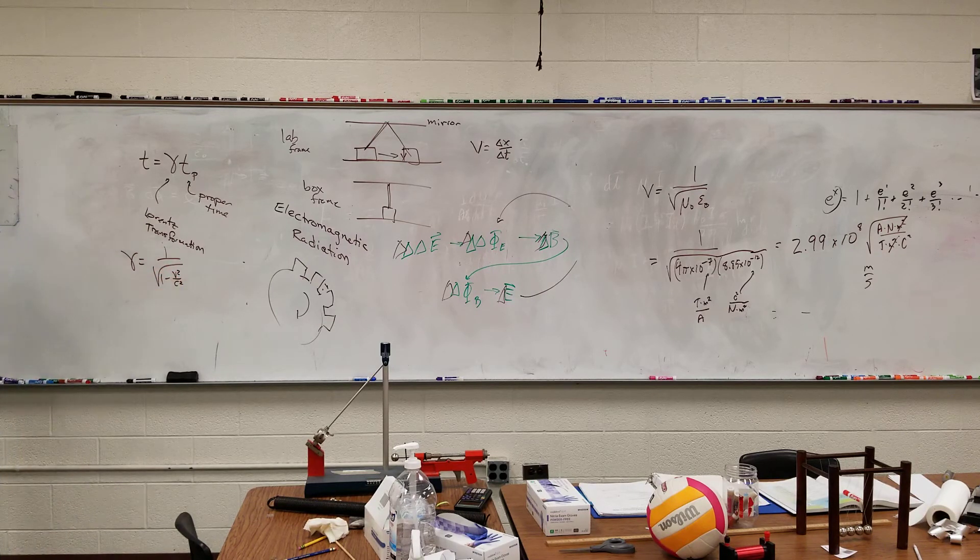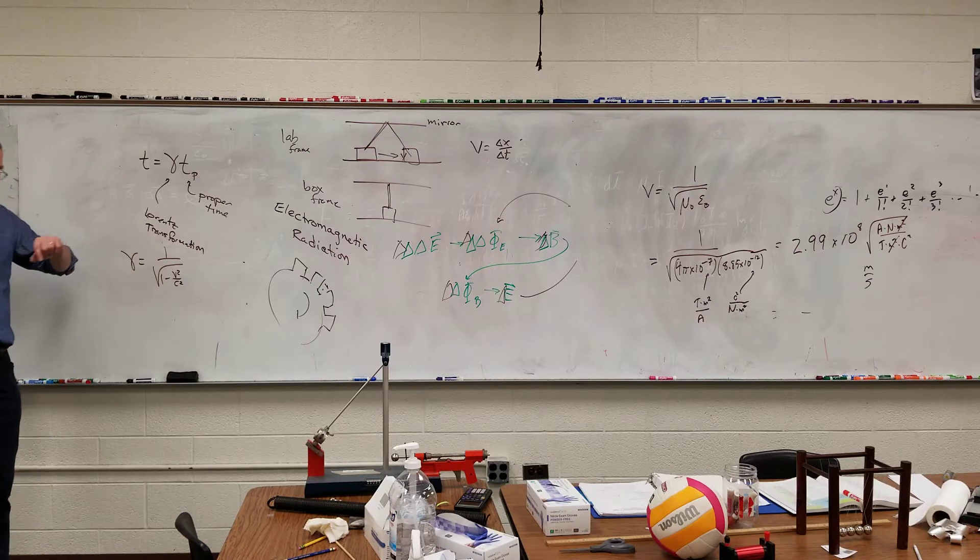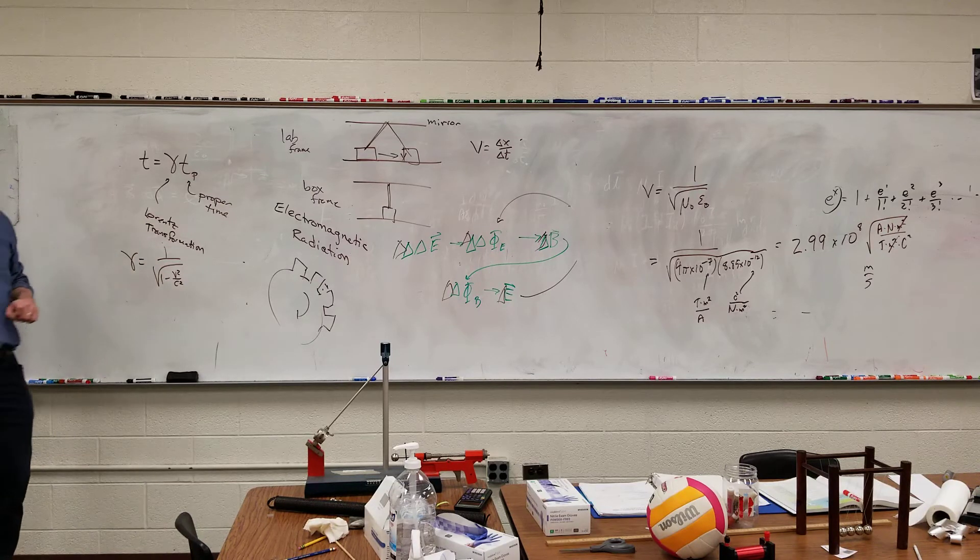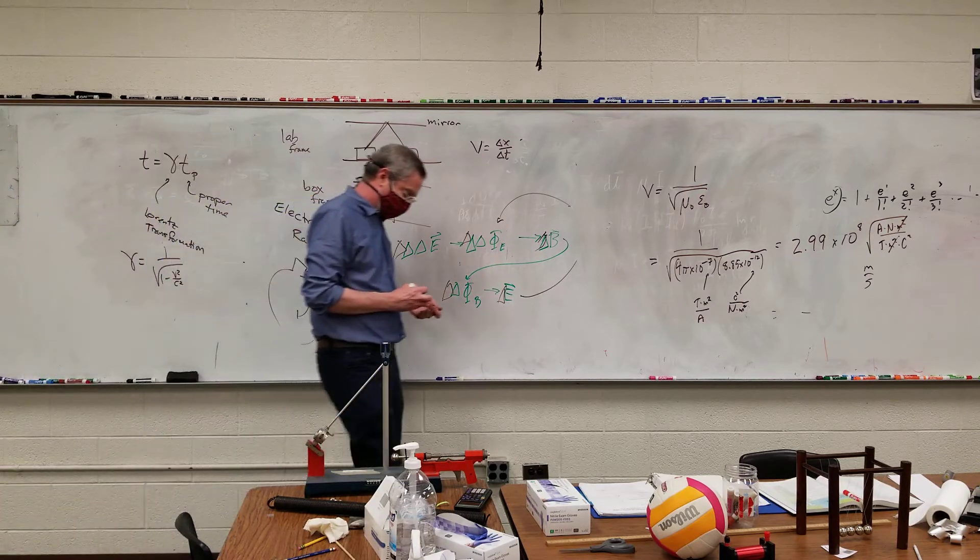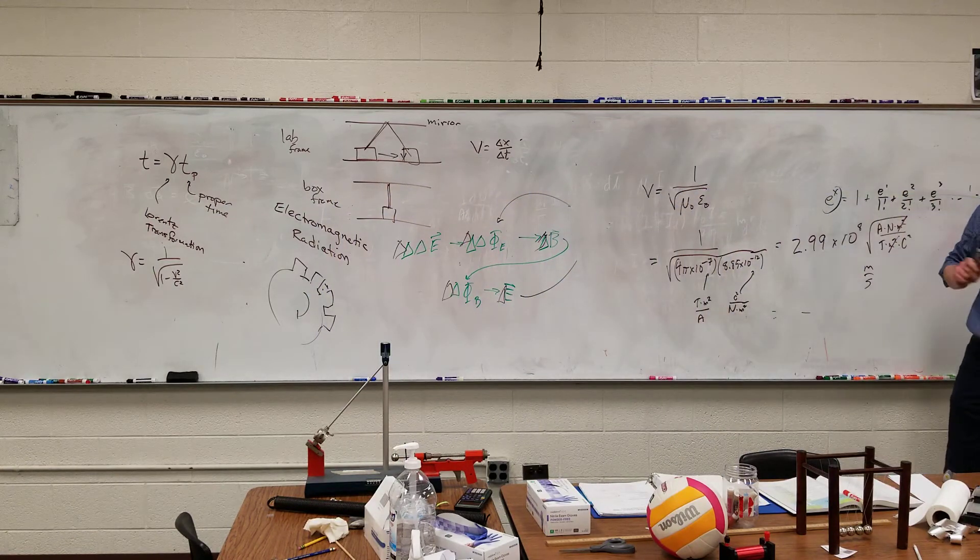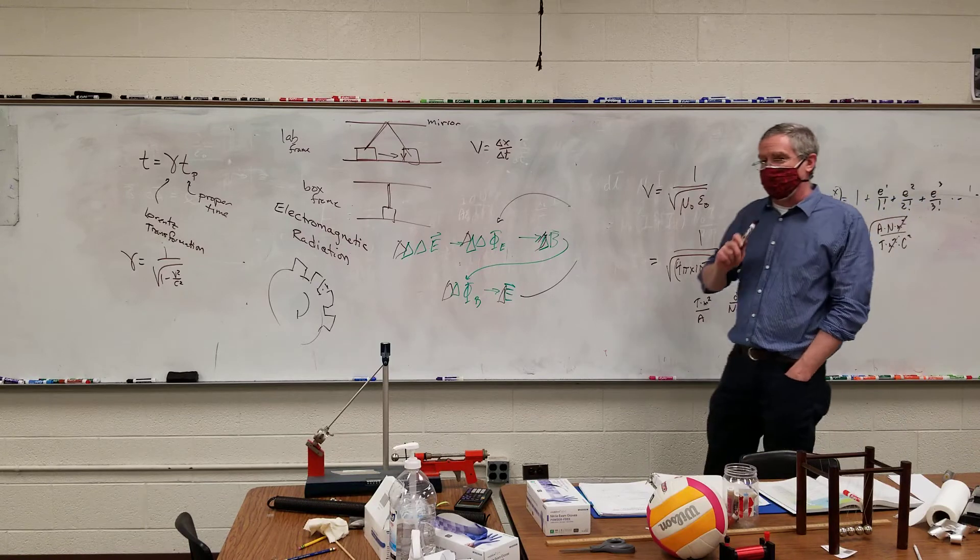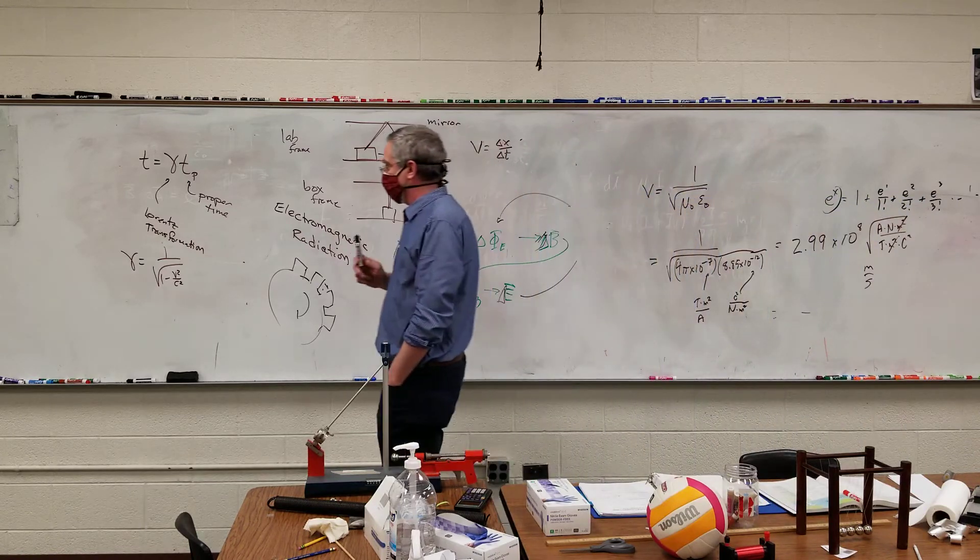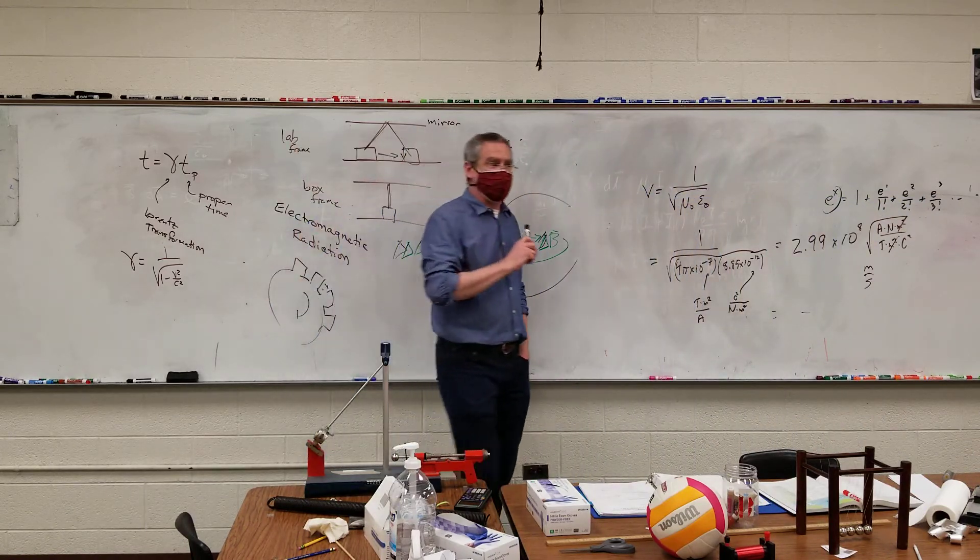All right. So this Lorentz transformation is one over the square root of one minus V squared over C squared. C is the speed of light, that constant. And V is how fast the object is moving. Now, this comes out of the mathematics. This is the case where the math drives the ideas. What happens if V equals C?